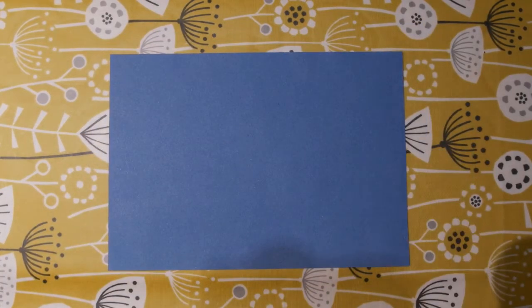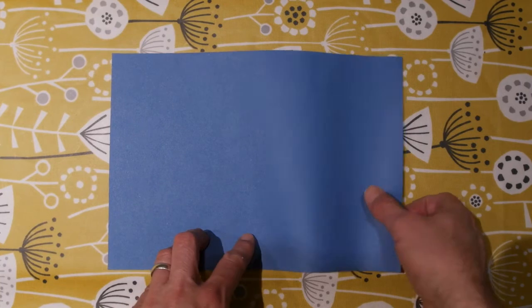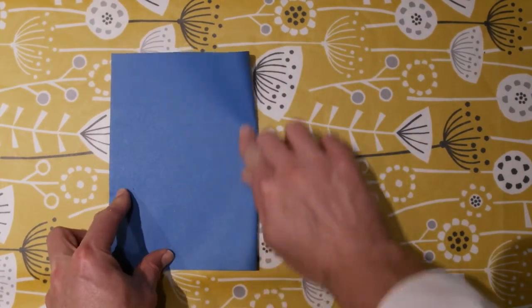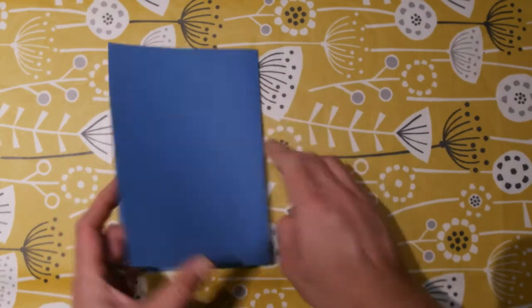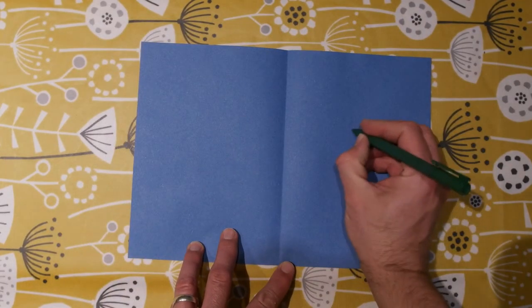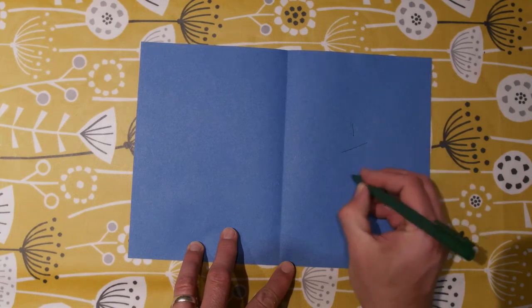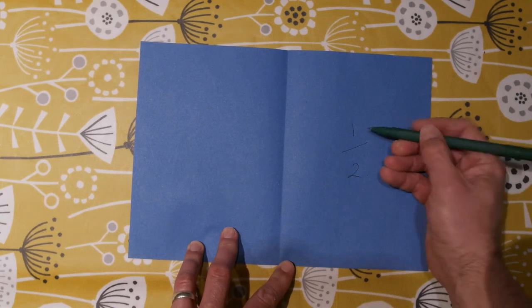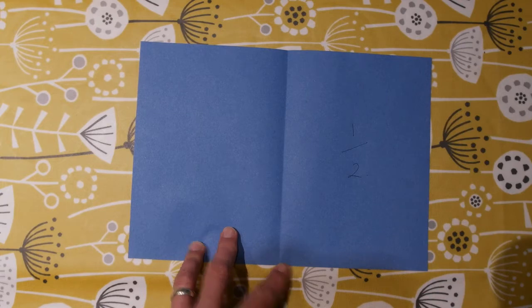I've got my second sheet of A4. This one I'm going to fold in half. There's two sections but I only need one of them so I'm going to put one over two, which is a half.